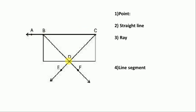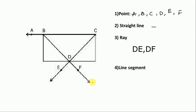So we write points A, B, C, D, E, F. For straight line, we have to see a line having two arrow marks — here no line has two arrow marks, so we put a dash. Next we go to ray. For a ray we have to see one point and one arrow mark. So we write first ray BA, next ray BF, and ray CE.